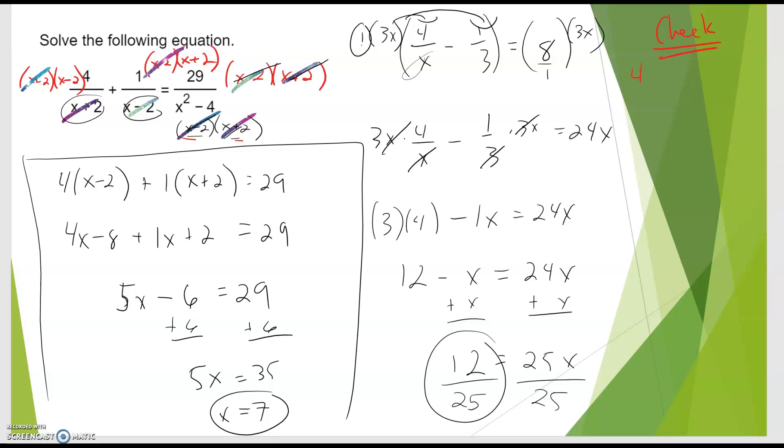I'm going to plug in a 7. So it is 4 over 7 plus 2 plus 1 over 7 minus 2 equal 29 over 7 squared is 49, 49 minus 4. That is, does 4 16ths plus 1 5th equal 29 45ths? Well, it doesn't look like it. This is 1 4th plus 1 5th. Is that true? Doesn't seem to be true. So that is a common LCD of 20. Put a 4 up here. Put a 5 up here. 9 20ths does not equal 29 45ths. But I thought I did this one before and got the correct answer.